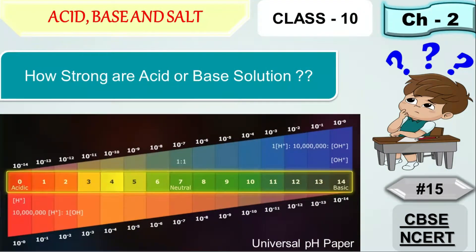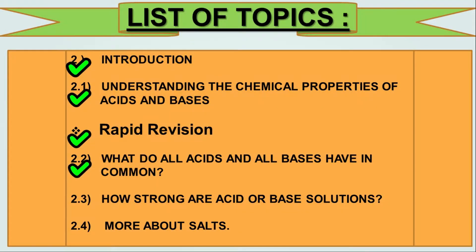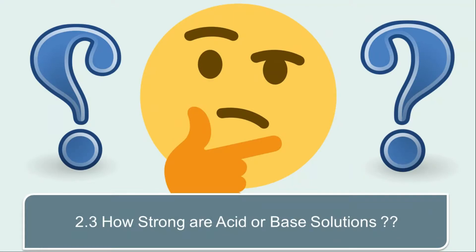In today's video lecture we are going to discuss section 2.3, that is how strong are acid and base solutions. Let's do a quick summary of what I covered in my previous video lecture: introduction, chemical properties of acids and bases, rapid revision of those properties, and section 2.2 — what do all acids and all bases have in common. If you want to watch those videos, click the i button.